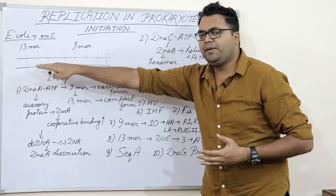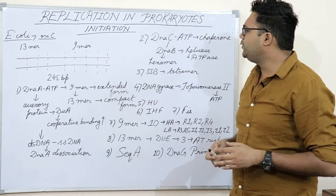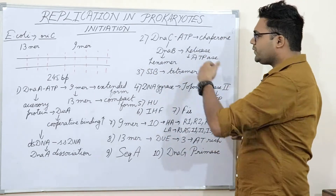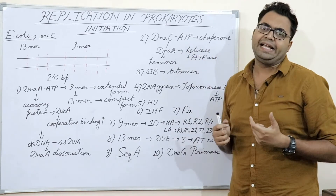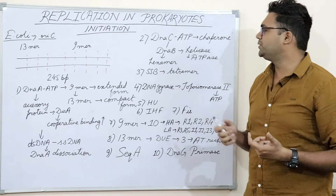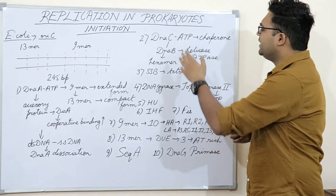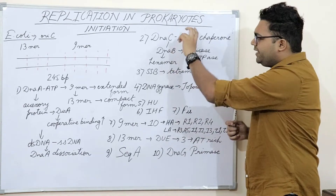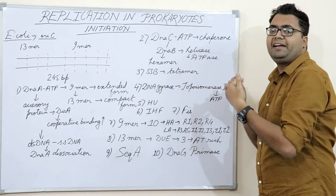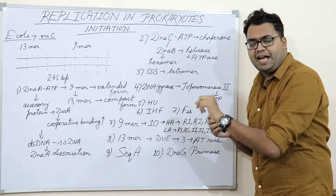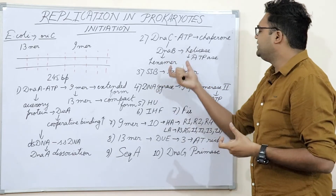This leads to the recruitment of another protein: DnaC-ATP combined with DnaB. DnaC is known as the helicase loader — CDC6 in eukaryotes — while DnaB is the helicase, known as the MCM (mini chromosome maintenance) protein in eukaryotes. DnaC acts as a molecular chaperone, repressing the activity of DnaB helicase when it is not required.